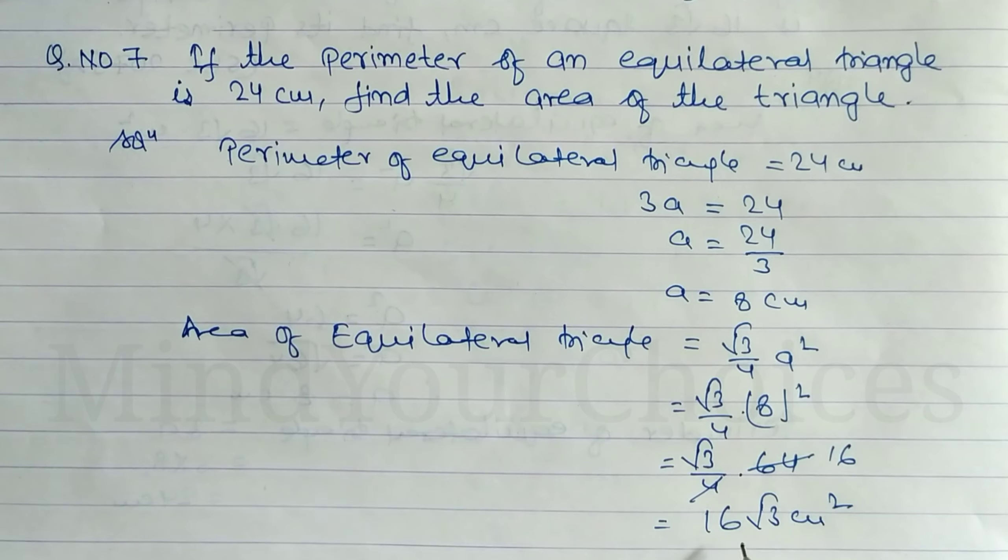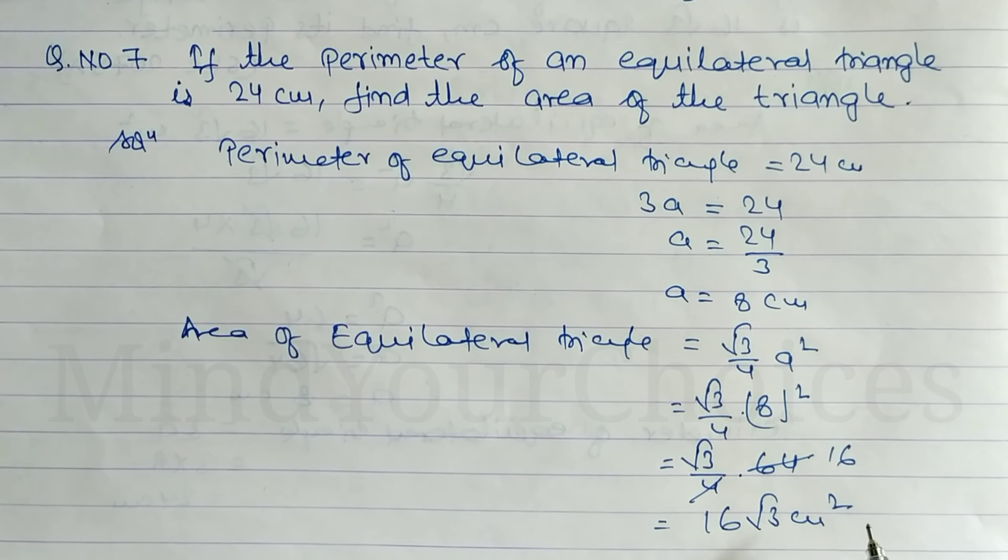So area of equilateral triangle is 16 root 3 cm square. Hope you understand this question.